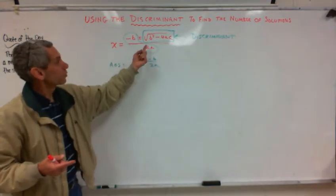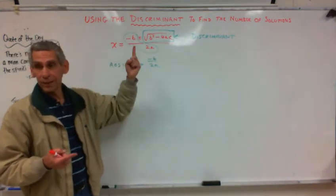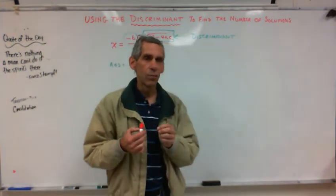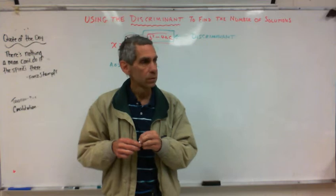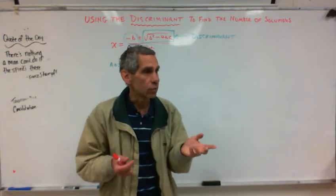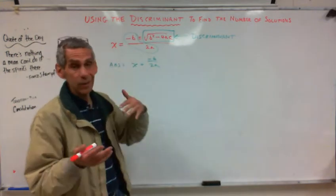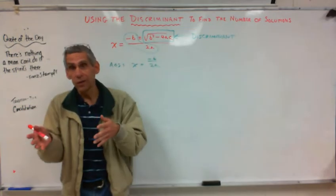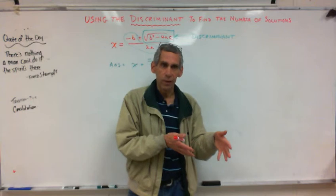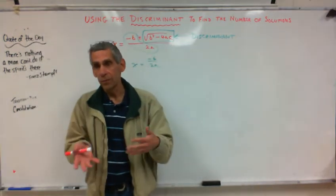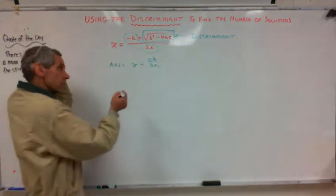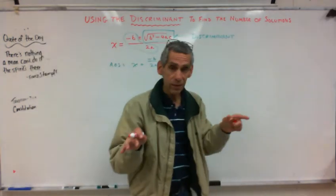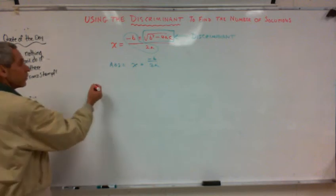Notice what's right in front of the discriminant: plus or minus. Why would plus or minus give you more than one answer? Because you've got your negative B and then you're adding a number, and that gives you one number. And then you've got your negative B and you're subtracting another, and that gives you a totally different number. So you're going to have two numbers. If I asked you to only find the number of solutions — not to solve it, but just to find the number of solutions of this problem.